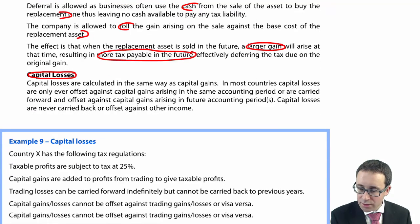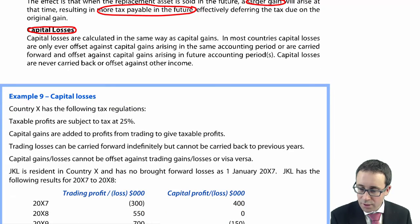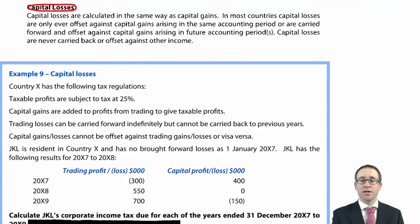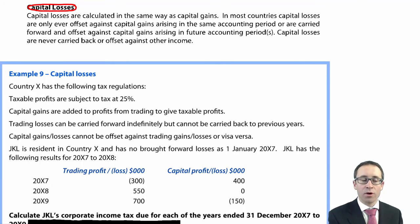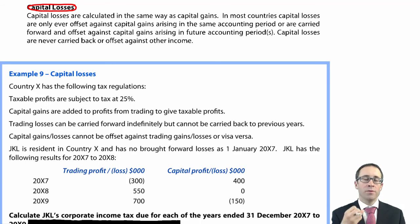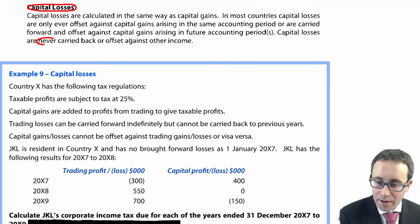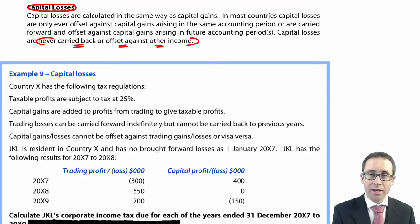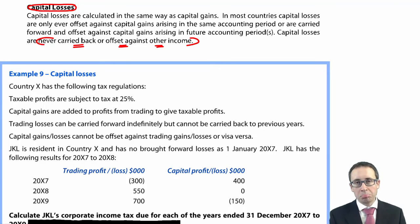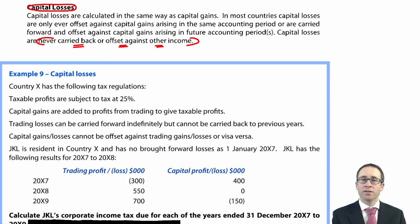Now, capital losses. We've gone through trading losses previously. Capital losses are calculated in exactly the same way — however, instead of getting a gain, you end up with a loss. The rules with capital losses will be given to you specifically within the question. The key point is that they are never carried back or offset against other income; you can only carry them forward against future capital profits.